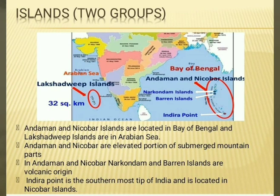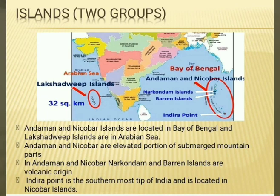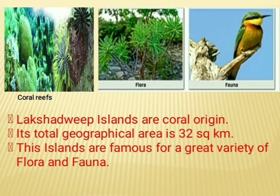An island is defined as a piece of land surrounded by water on four sides. Andaman and Nicobar Islands are located in the Bay of Bengal and Lakshadweep Islands are in the Arabian Sea. Andaman and Nicobar Islands are elevated portions of submerged mountain parts running from Myanmar mountains and Arakan Yoma. Narcondam and Barren Islands in Andaman and Nicobar are of volcanic origin. Indira Point is the southernmost tip of India, located in Nicobar Islands, and was submerged in the 2004 tsunami. Lakshadweep Islands are of coral origin, with a total geographical area of 32 square kilometers. These islands are famous for great variety of flora and fauna — meaning a variety of plants and animals.